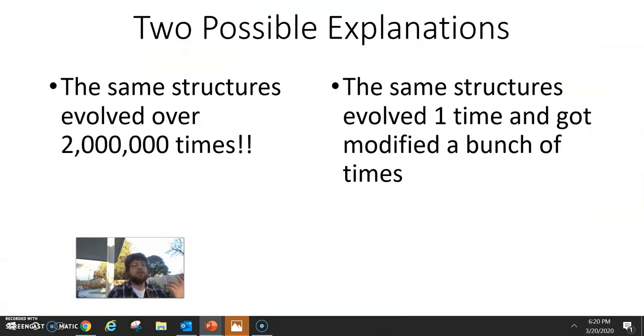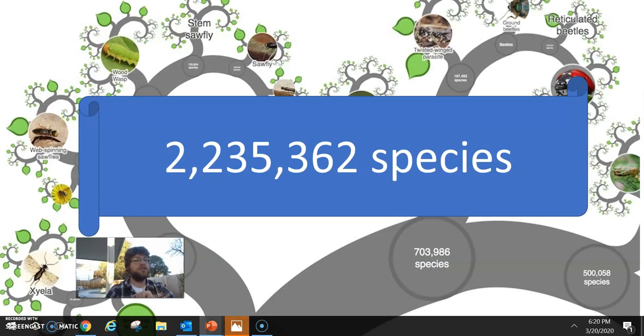Okay. So, either one, all those structures happened to form the same exact way, 2 million plus times. Or, it happened one time and just has changed a bunch and made little changes, little alterations here and there. But overall, the exact same.